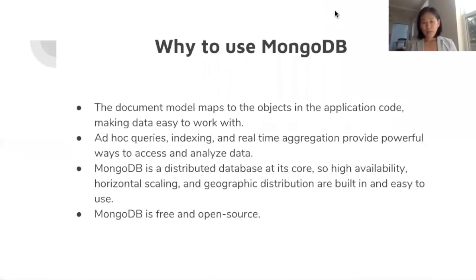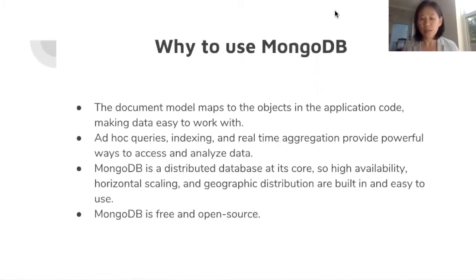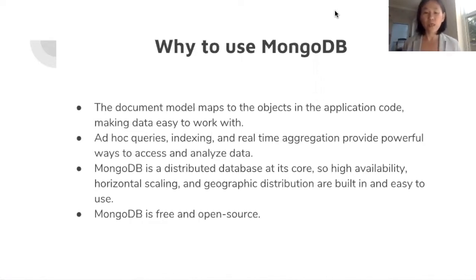People are using MongoDB because the document model maps to the objects in the application code, making data easy to work with. They also have features like ad hoc queries, indexing, and real-time aggregation, which provide a powerful way to access and analyze data. A key point for why MongoDB became so popular is that it's a distributed database at its core, so it's highly available, horizontally scalable, and geographically distributed.